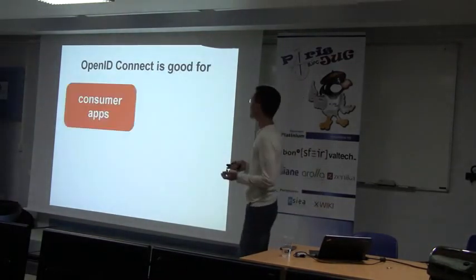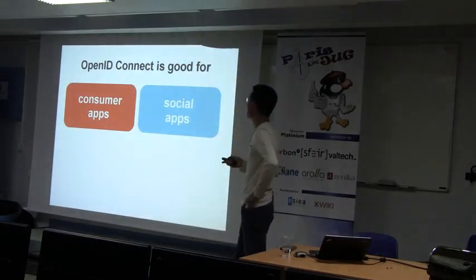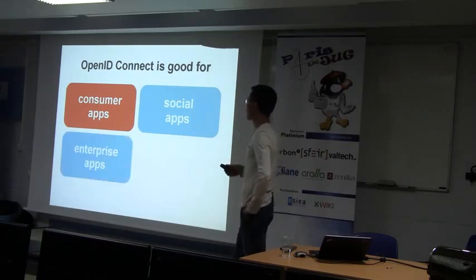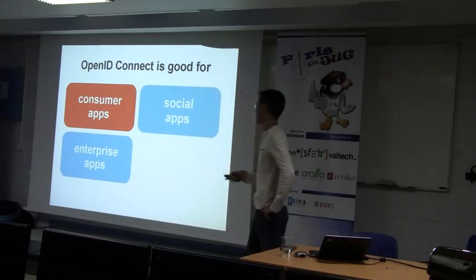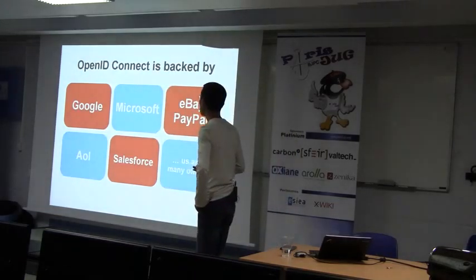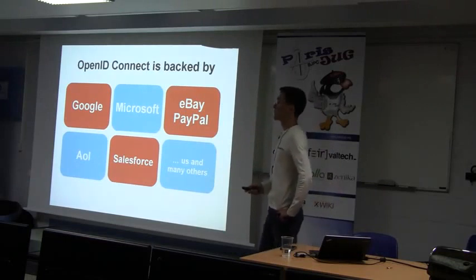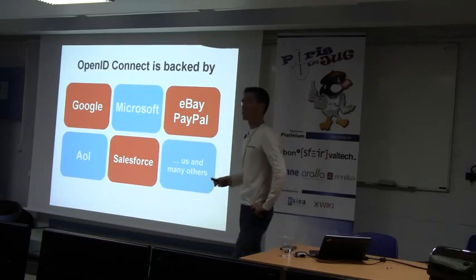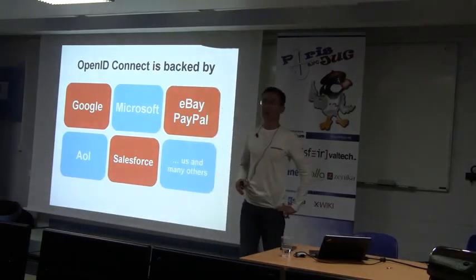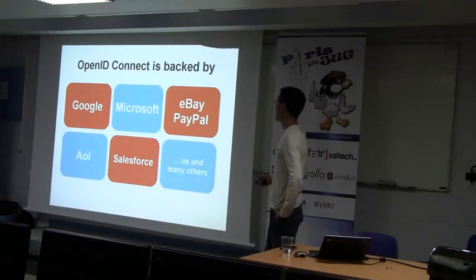OpenID Connect is good for consumer apps, social applications — logging in with third-party providers such as Google. It also has features which make it suitable for enterprise and of course mobile applications. Another good thing is that OpenID Connect has been backed from the very beginning by the major players. Microsoft did quite a lot of effort, and one of their top tech guys co-chairs the working group together with Google. There are also many other implementers and backers in the corporate world such as Salesforce.